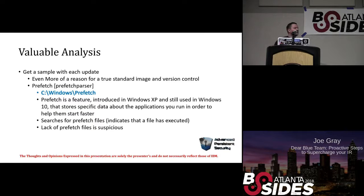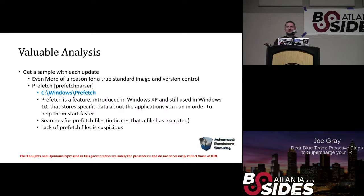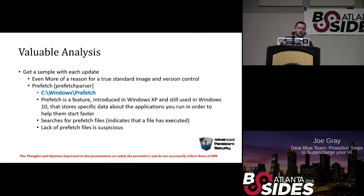With this valuable analysis, we should get a memory sample with each update. Effectively, every single computer on your network needs a memory image with every update. Storage is money — but why not have a golden image, like a standard image for your entire organization that you maintain version control on? Press play on it and get a memory image. You don't have to do every single host. Use templates — HR has some software that IT doesn't, IT has stuff that accounting doesn't. Get an image of each of those templates, execute it, capture the memory, store it off to the side. When you do an update to the image, same thing.